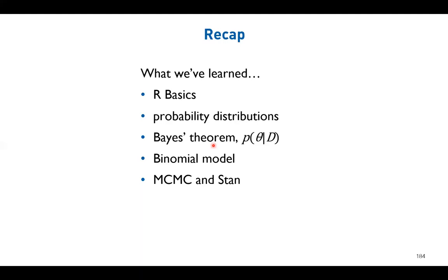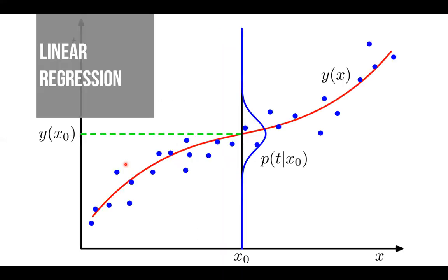Then we moved to the specific globe tossing example: nine experiments, six water observations. We want to solve the posterior distribution of unknown parameter theta - the proportion of water covering the surface. It follows a binomial process. We tried to solve it using grid approximation and Markov Chain Monte Carlo using the language called STAN. Now we must move forward.